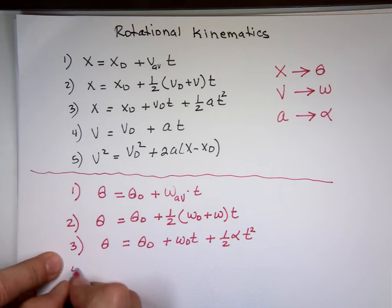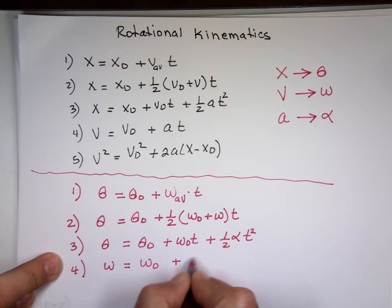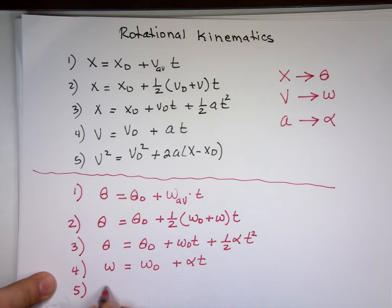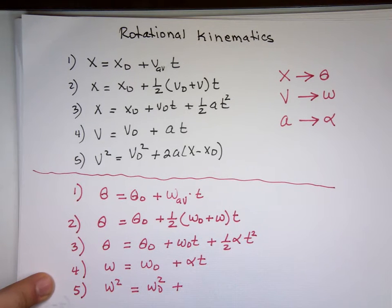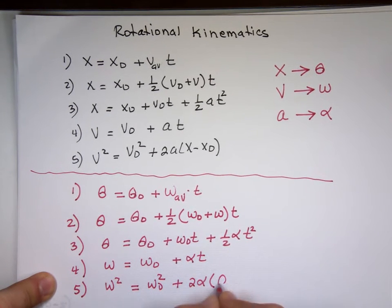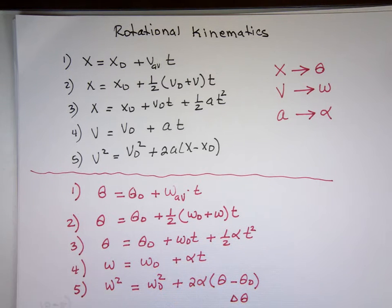Equation 4: w equals w 0 plus alpha t. Equation 5, the last one: w squared equals w 0 squared plus 2 alpha times theta minus theta 0, or you can write that delta theta if you want. So it's the same equations. All I did, took x out, put theta. Took v out, put w. Took a out and put alpha. And if you remember how we use them, we are in business now.